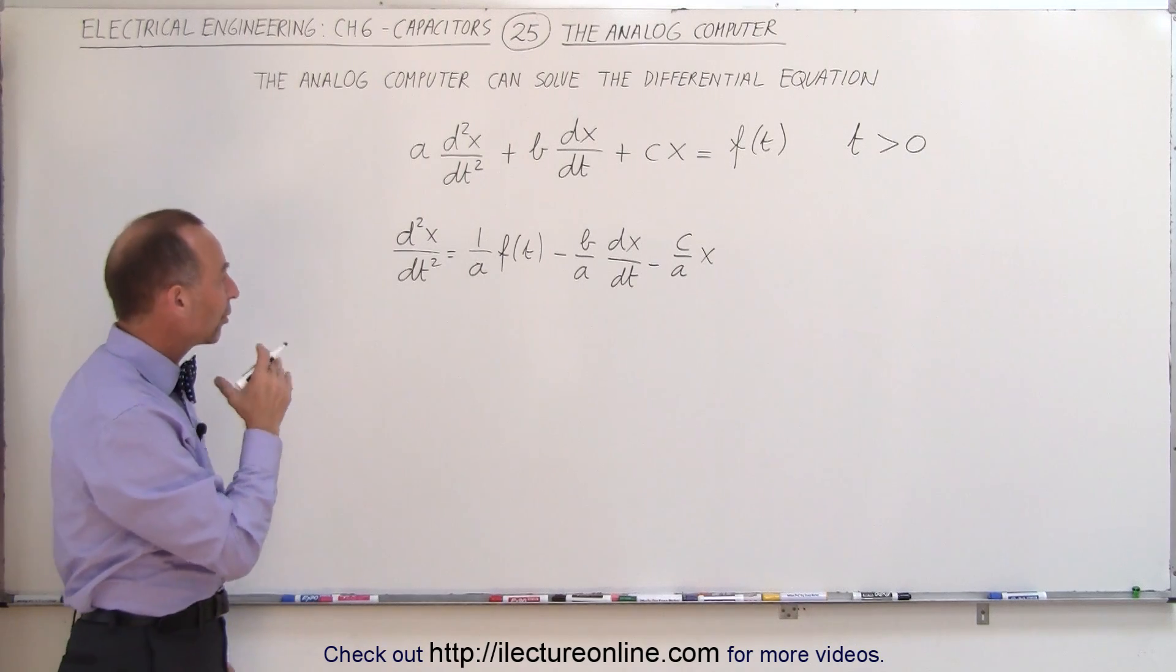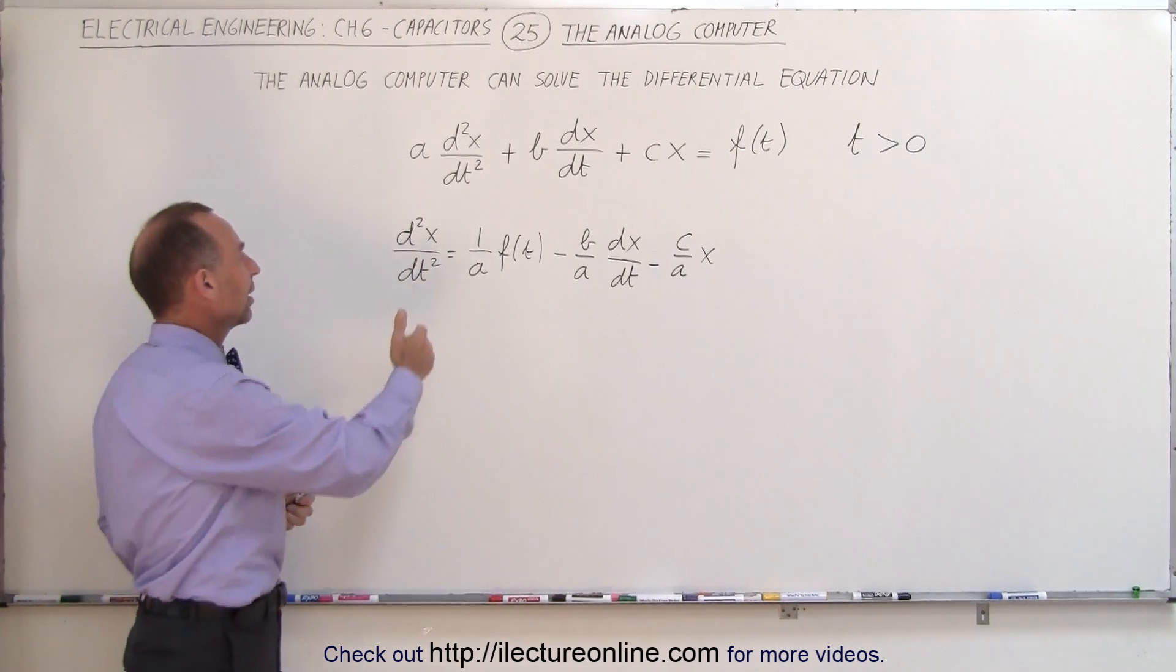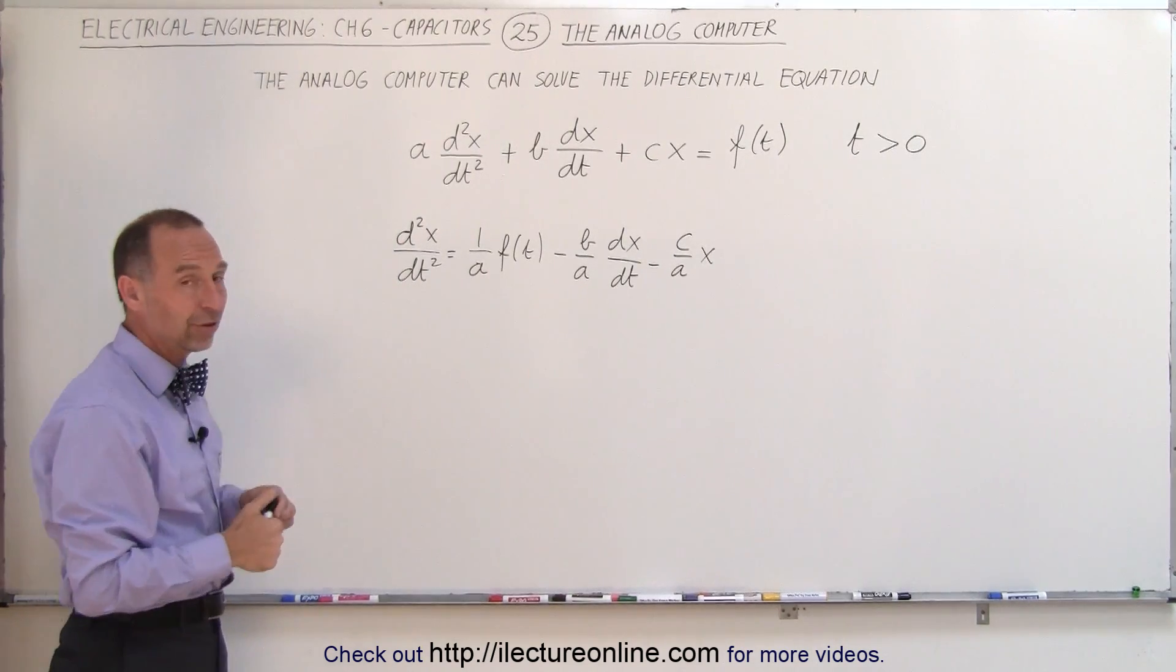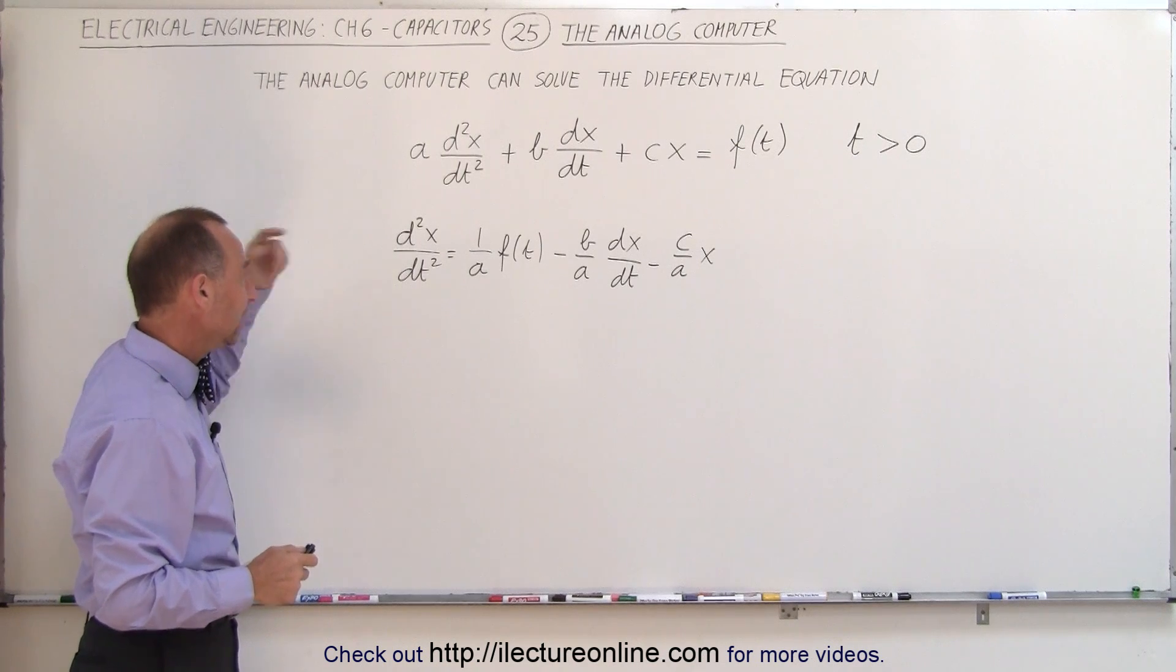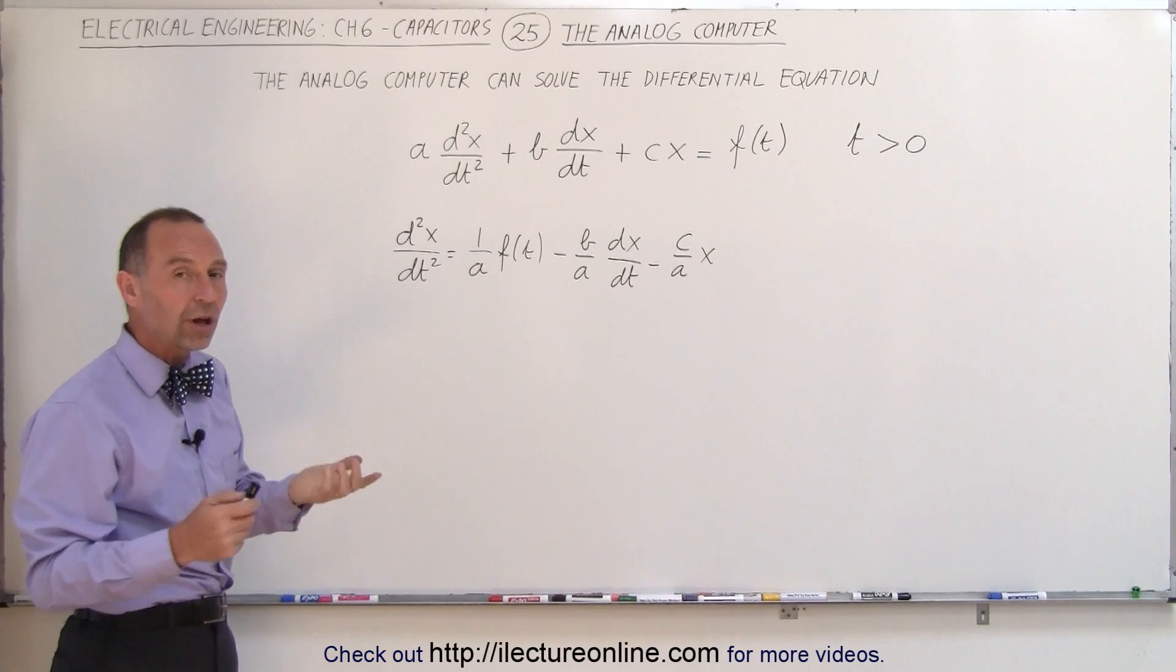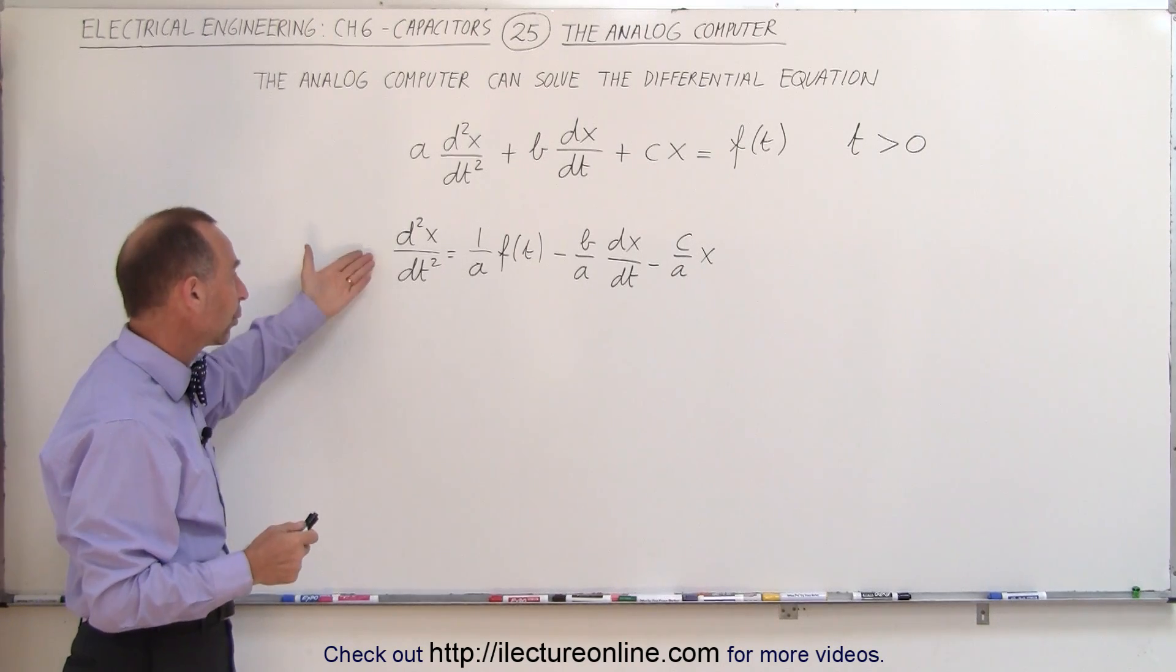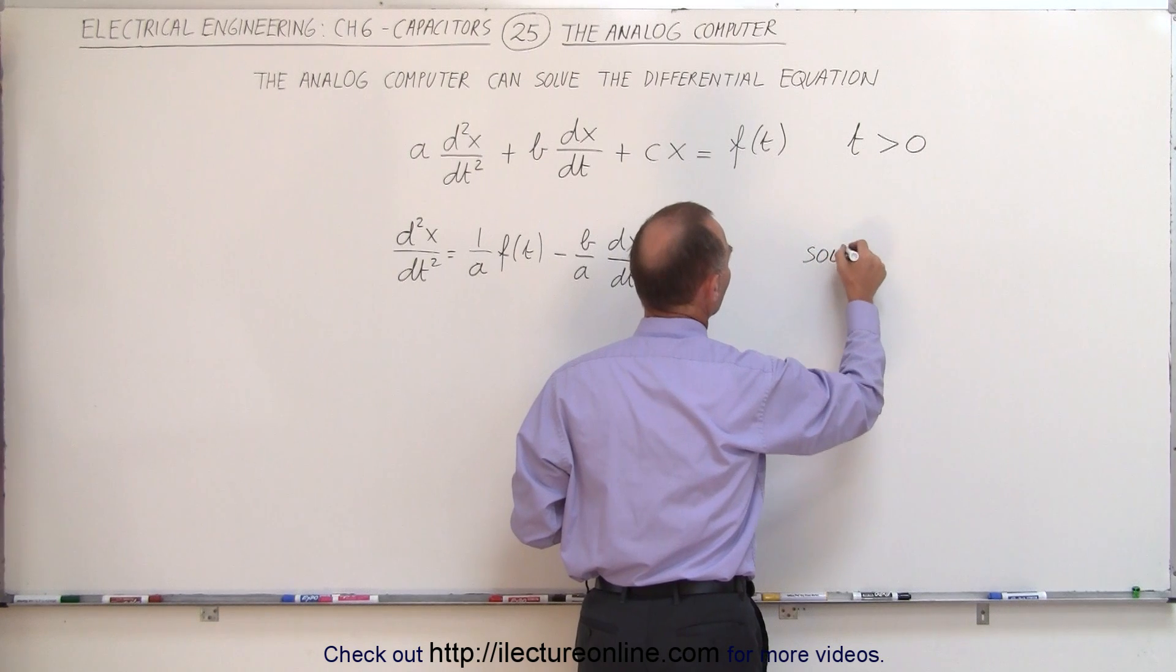Now notice what we're essentially trying to do here is we're trying to solve for x. Assuming that this is an input voltage or perhaps an output voltage, let's think of this as representing the second derivative with respect to time of the output voltage. We want to solve this for v_o, or in other words, we want to solve this for x. How do we do that? So we're going to solve this for x.